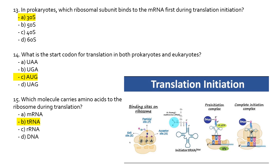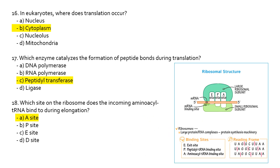Which molecule carries amino acids to the ribosome during translation? That is tRNA. In eukaryotes, where does translation occur? Translation in eukaryotes occurs in the cytoplasm or endoplasmic reticulum. In prokaryotes, replication, transcription, and translation all occur in the cytoplasm. In eukaryotes, DNA replication and transcription occur in the nucleus, while translation occurs in the cytoplasm or endoplasmic reticulum.